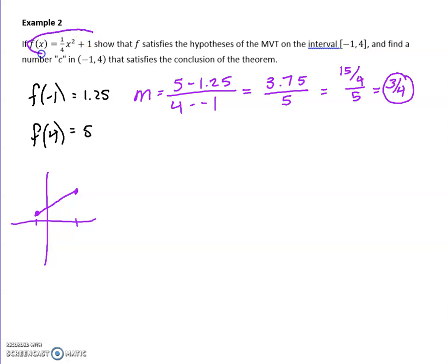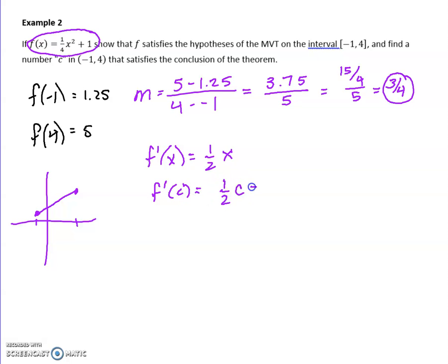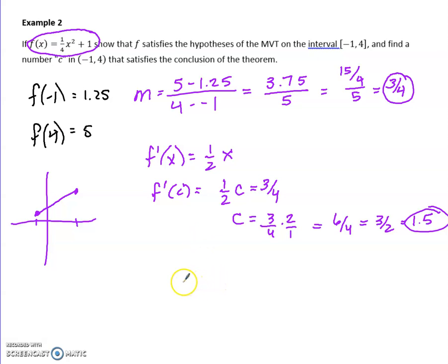If I want the slope in general, I need the derivative. I'm looking for when my derivative equals 3/4. Finding the derivative: bring the 2 out front, giving 2/4 or 1/2 times x. Not too difficult. I want to know when this equals 3/4, but I'm calling the variable C, so I write: 1/2 · c = 3/4. Multiply both sides by 2, and I end up with 6/4, or 3/2, or 1.5. So when C is 1.5, I have the same slope as the endpoints. It's important to state that f(x) is continuous — this is a polynomial, so there are no places where it's discontinuous. Therefore, there exists a C value, and that C value is 1.5.